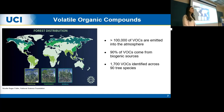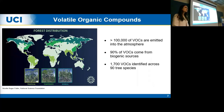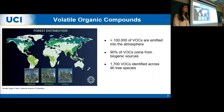About 1,700 different VOCs have been identified across 90 different tree species. Depending on the tree species, the specific volatile organic profile released from the tree can vary.